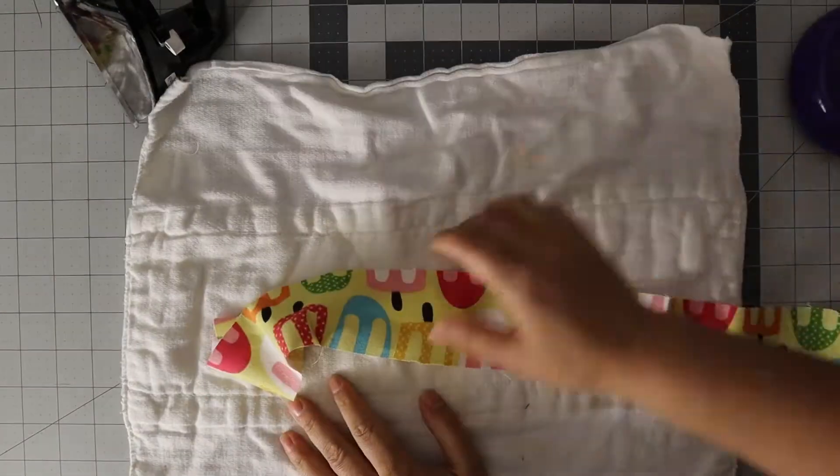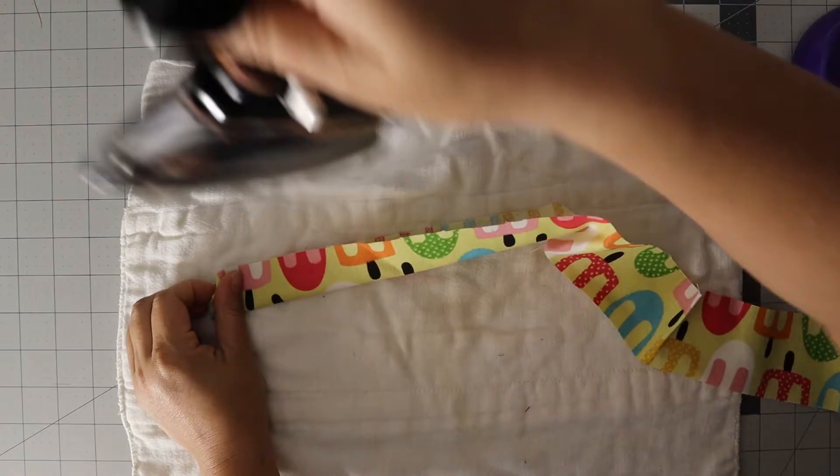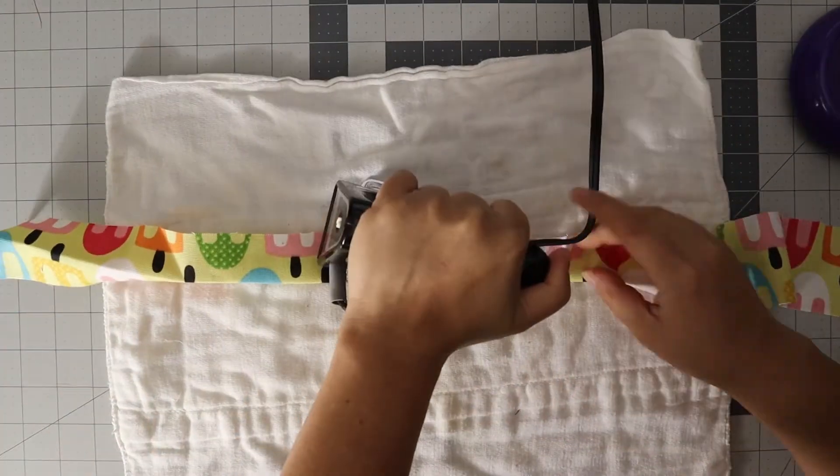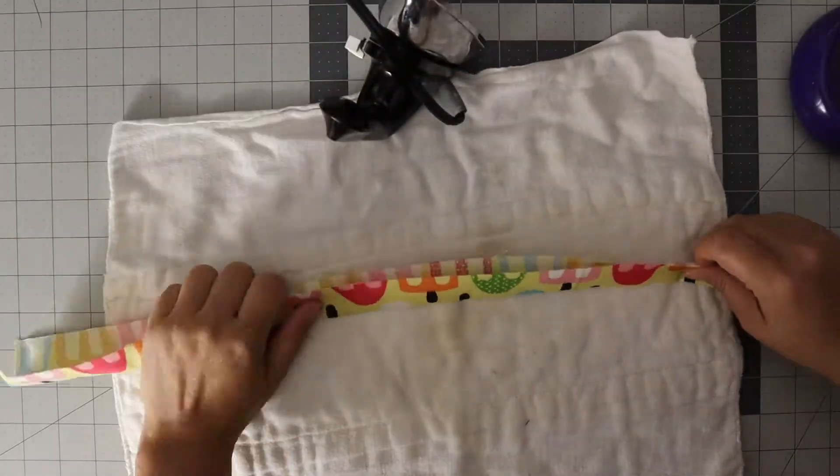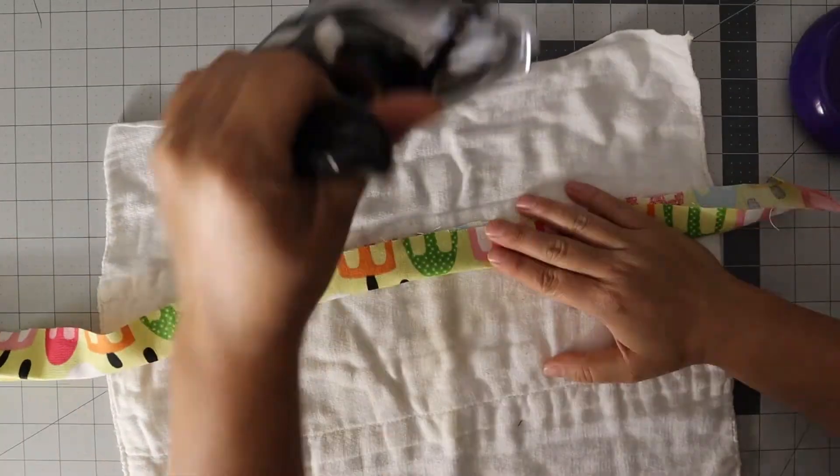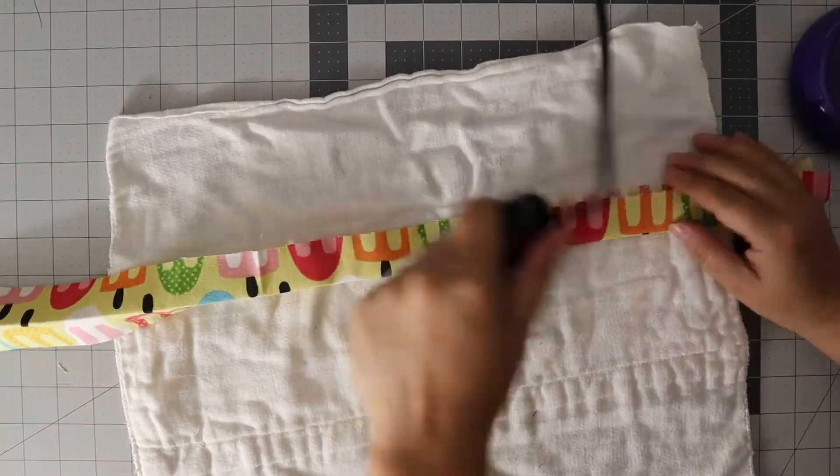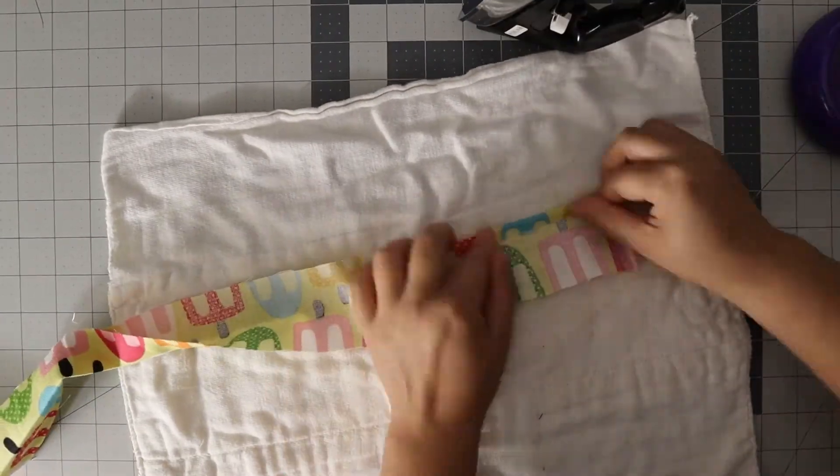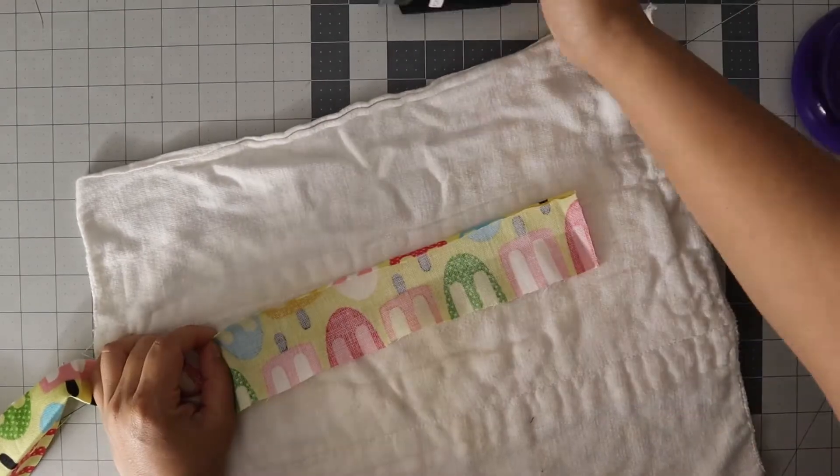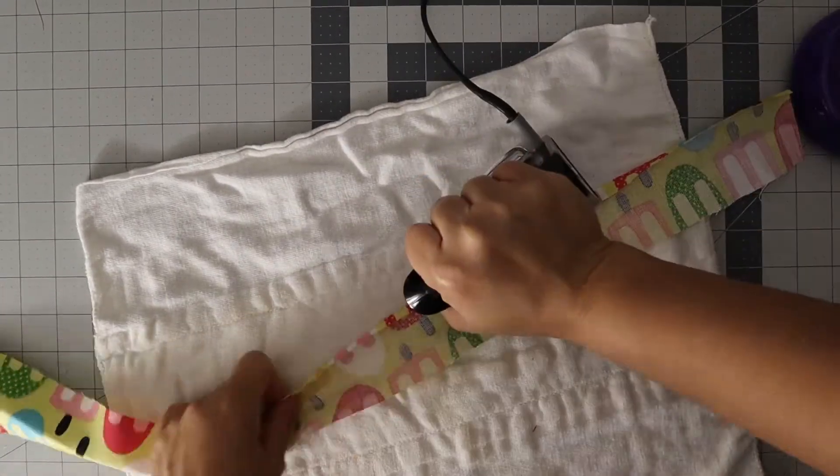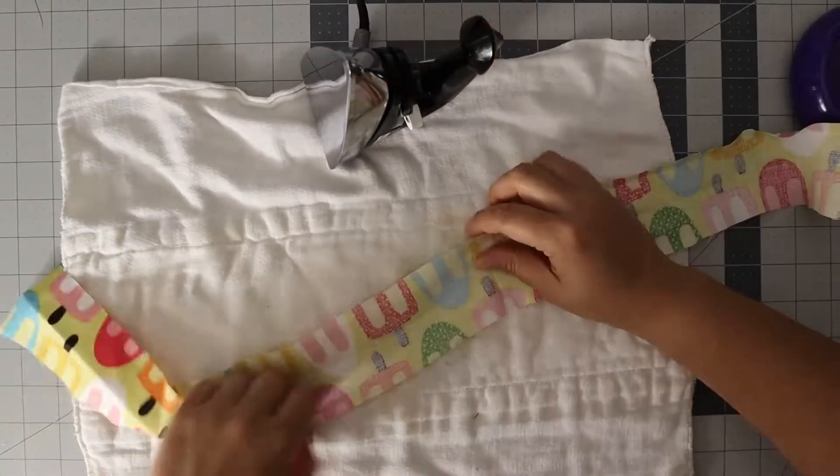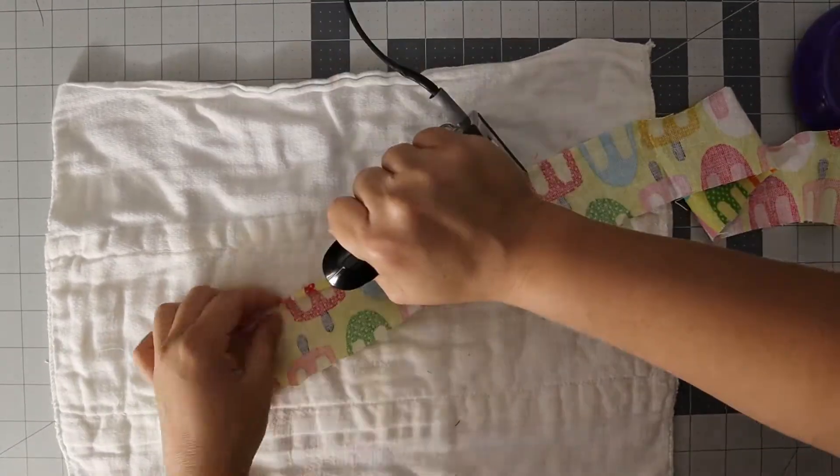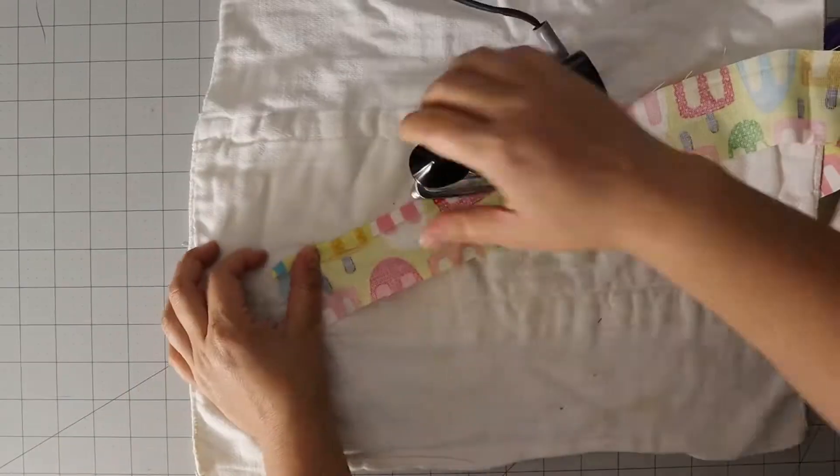Now before we do that, we're going to press the waistband in half. By the way, don't do this on your cutting mat if you're using a cloth diaper insert because I kind of wore my mat. So fold over a half inch on one side, that's for the tuck over when we have to flip it over to sew it onto the pants. So it's in half and then a half inch on one side.